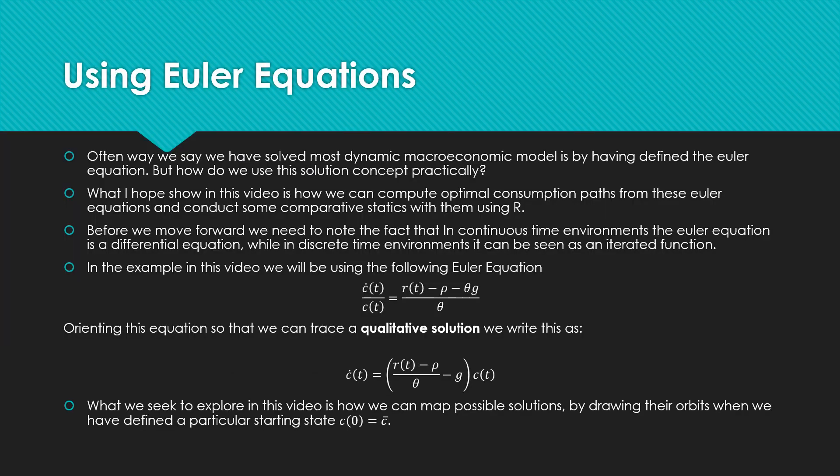Often the way we say we have solved most dynamic macroeconomic models is by saying that we have defined the Euler equation or we have solved for the Euler equation. But how do we use this solution concept practically? What I hope to show in this video is that we can compute optimal consumption paths from these Euler equations and conduct some comparative statics using them in the context of R.